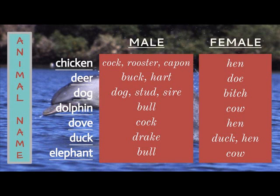A male deer is known as a buck or a hart — that would be a red deer — and a female deer is a doe. A male dog could be called a dog, a stud, or a sire; a female dog is a bitch.